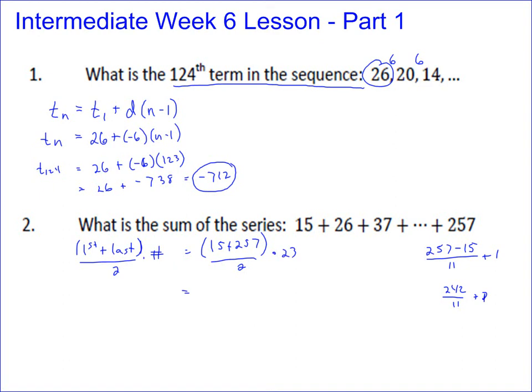So that's going to give you 15 plus 257 is 272 divided by 2 is 136. So you're doing 136 times 23, and 136 times 23 just equals, as you go through and multiply it out, 3,128. So the sum of the series there is 3,128.